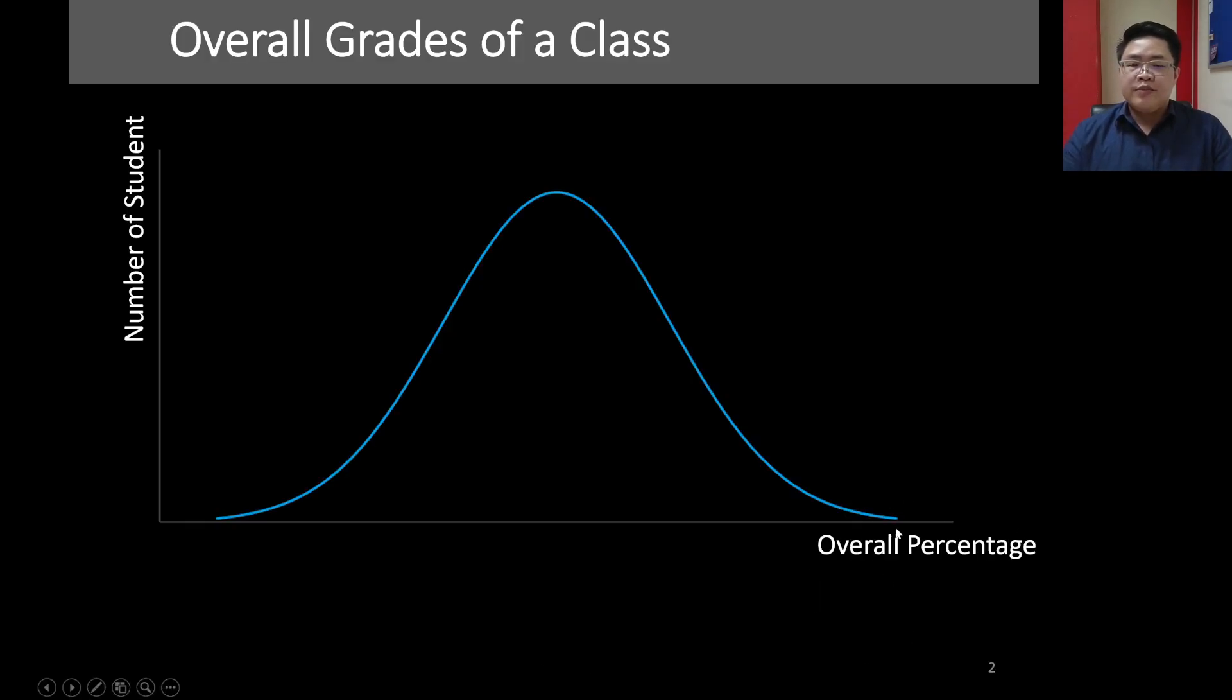If you were to plot out the overall percentage of a class, you would see that a small number of students, maybe two or three, will receive a really high grade or high percentage. Another small number of students receive really bad grades, really small percentage. And the rest of the class, or the majority of the class, would fall somewhere in the middle. We usually call this curve a bell curve.